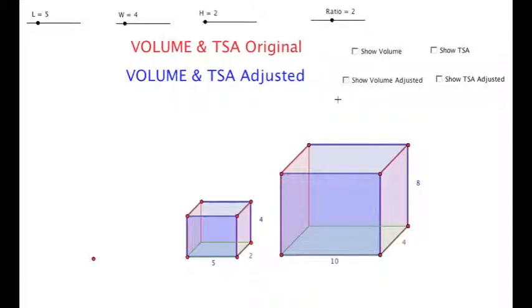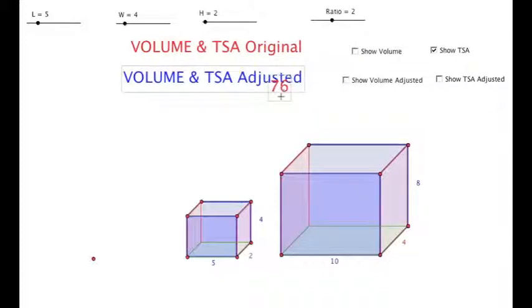Going to look at total surface area. Surface area would be taking the area of all six faces and adding them together. The total surface area for the original box was 76.